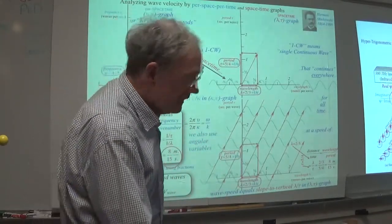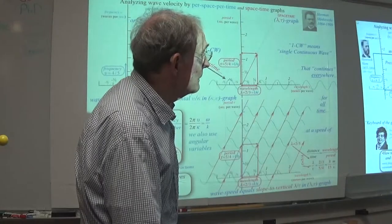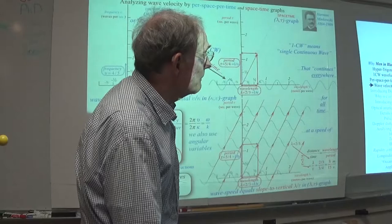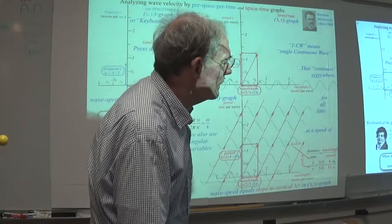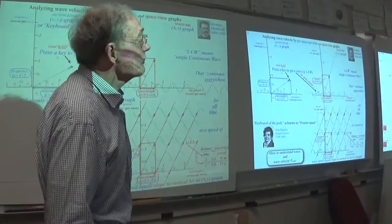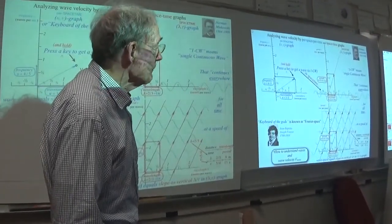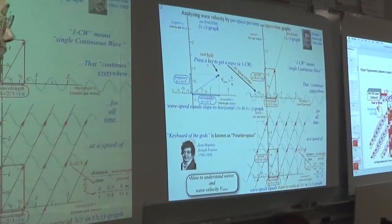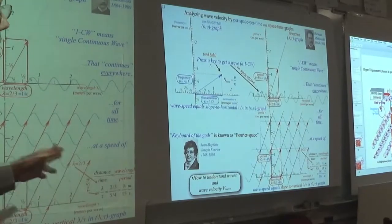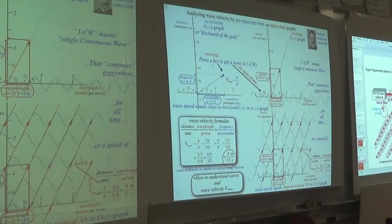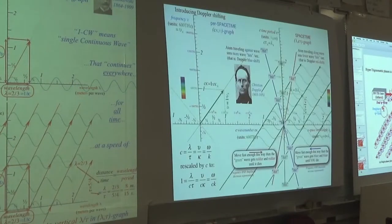Wave speed equals slope to vertical in the space-time graph. But it's the slope to horizontal in the new k space. That's going to be important as we go back and forth between per-space-time and space-time. And that's the secret to making relativity simple: let the waves tell you what they're doing.